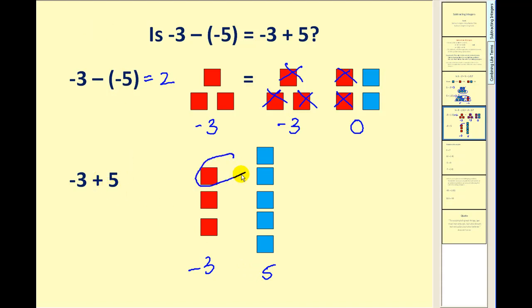we know this pair would be 0. This pair would equal 0. And this pair would equal 0. And as a result, the remaining squares, two blue squares, gives us positive 2.